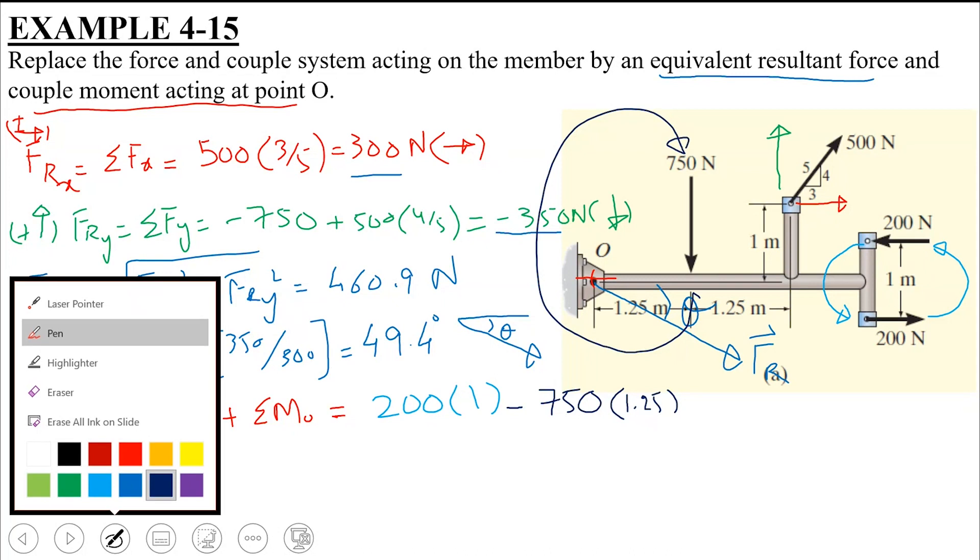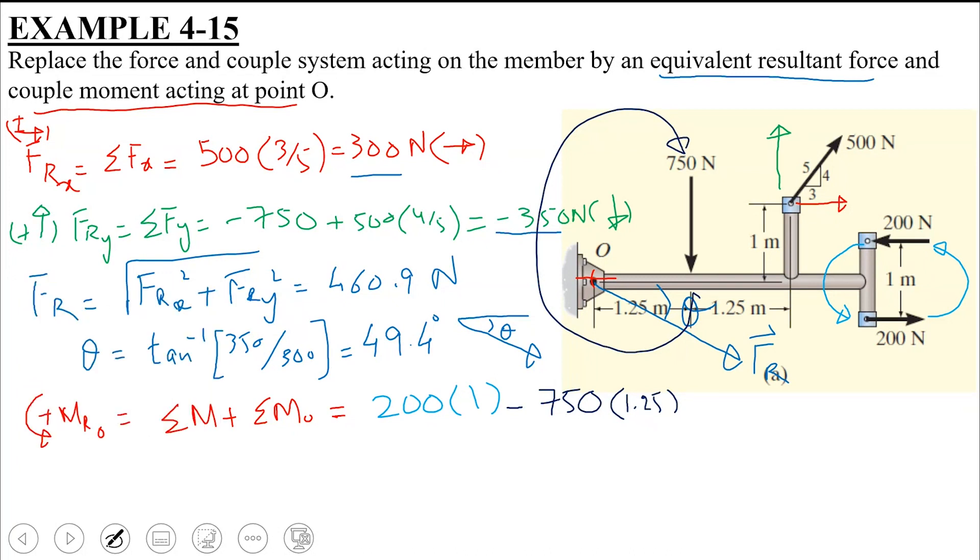Okay. Coming to the 500 N force. If I talk about this component, which I showed in red, 500 times 3 over 5. How much perpendicular distance is this component from point O? 1. 1. And what direction is it about point O? Clockwise. Clockwise. So I'm going to include it with a negative sign.